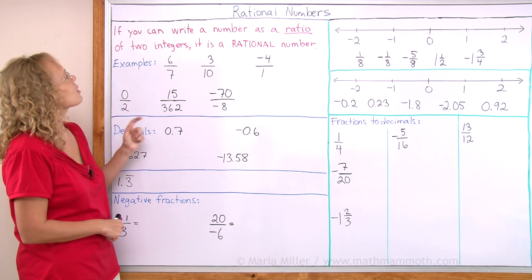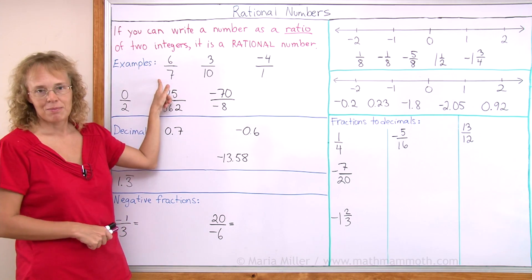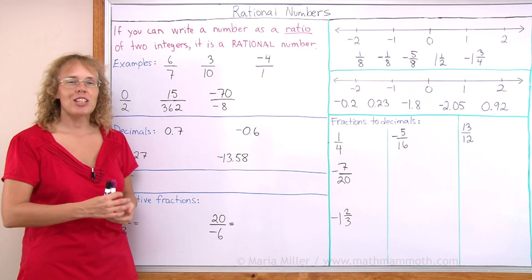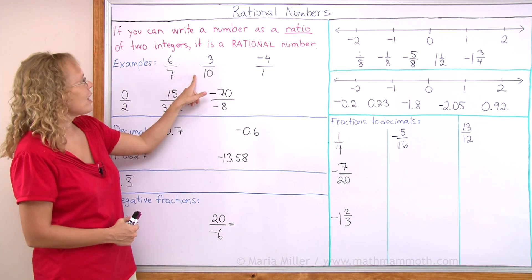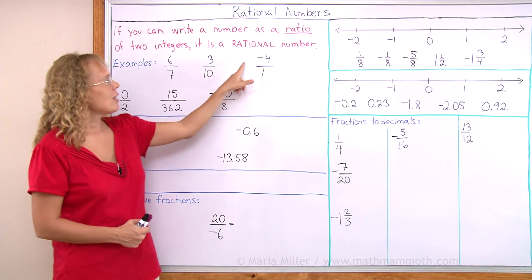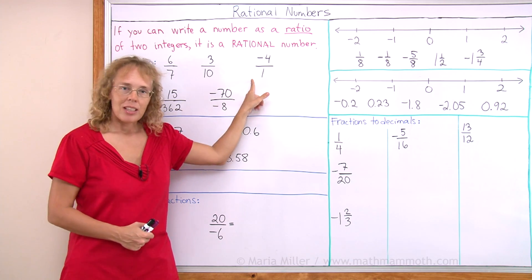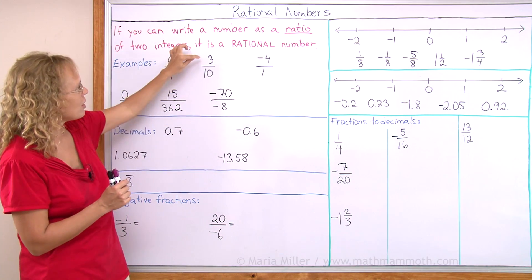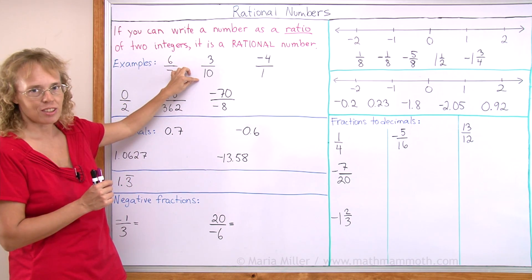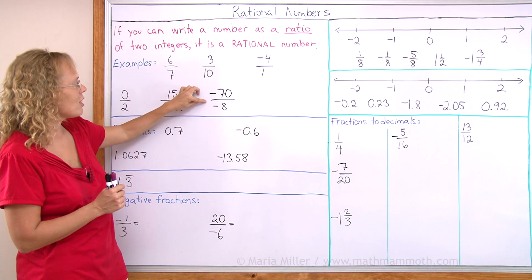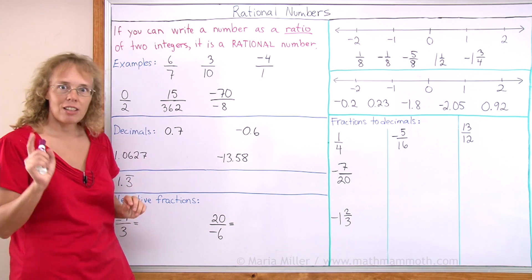Here's some examples: 6 over 7, or the ratio 6 to 7, or the fraction 6 sevenths; 3 tenths; and negative 4 divided by 1. In each of these cases, I have an integer divided by an integer. That's a rational number.